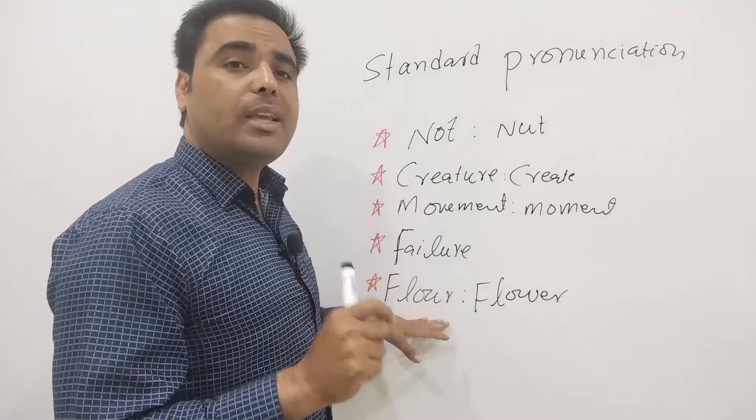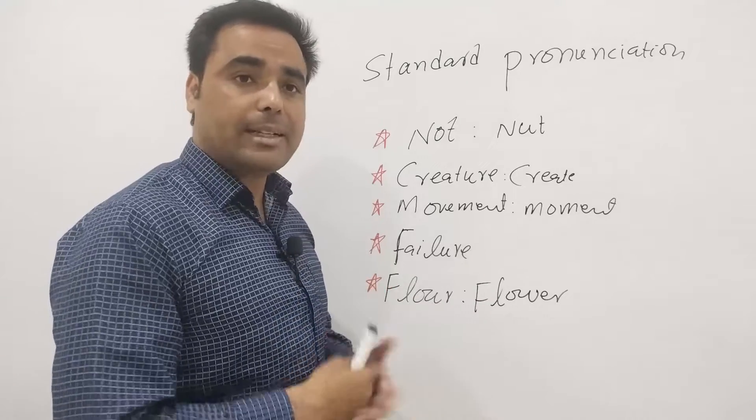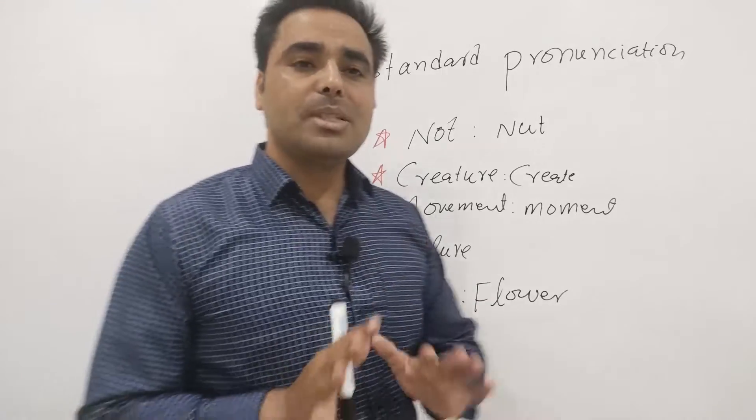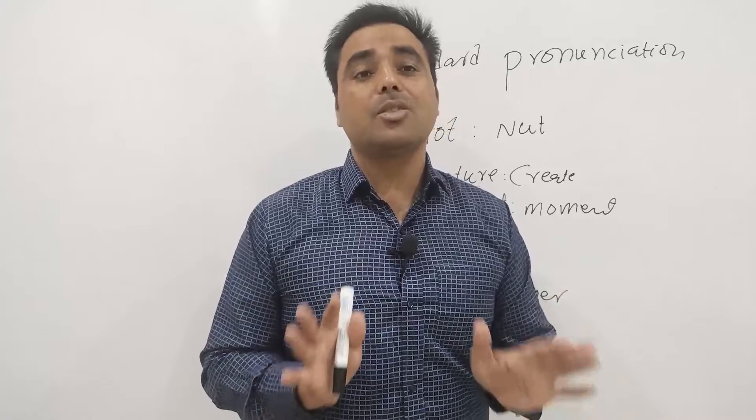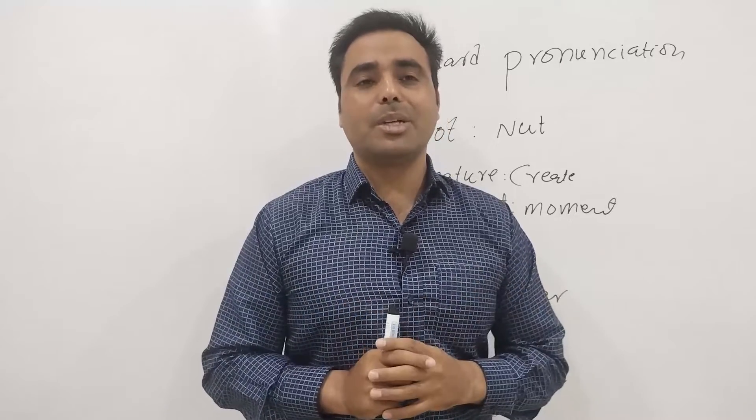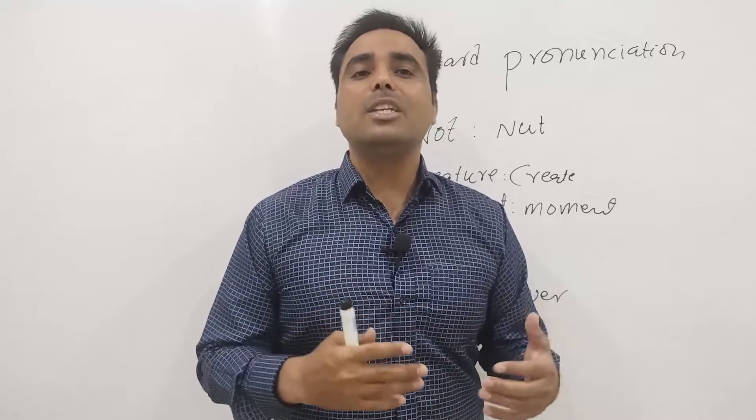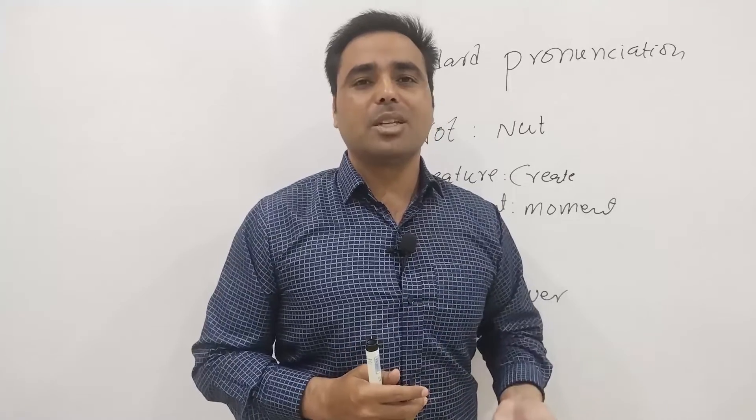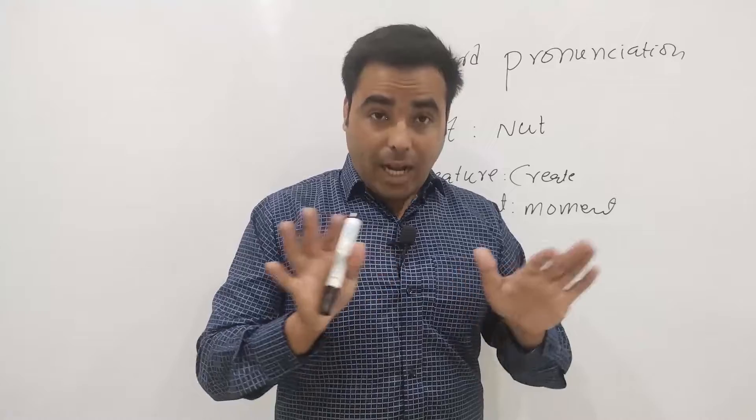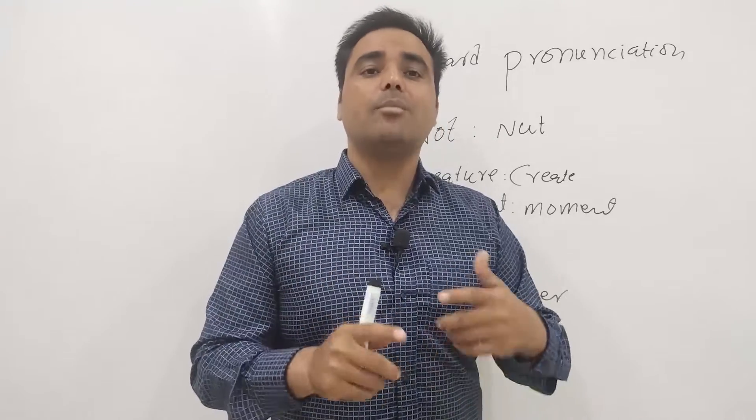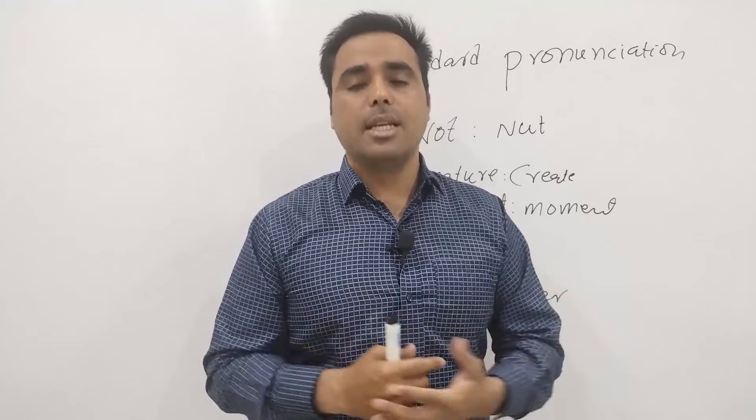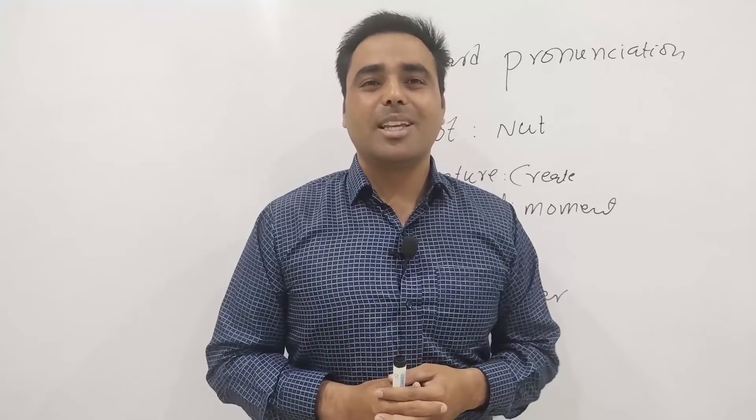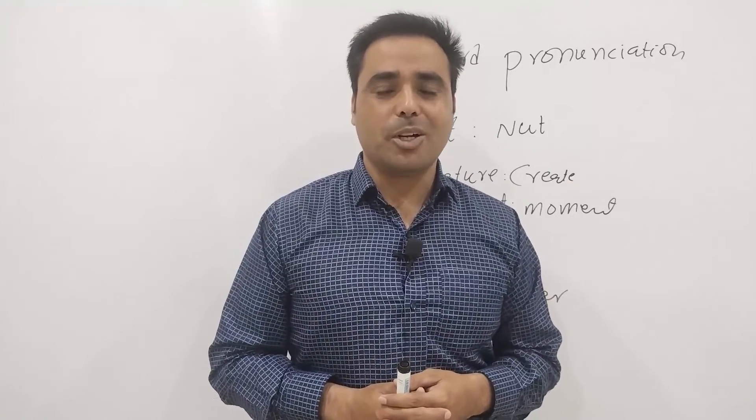So to recap: the first one is not or nut, second is creature not creature, next is movement not moment, second last is failure not fail-ever, and the last one is flower. So I hope you will pronounce these in the standard way. For more interesting videos, keep watching English with Sadiq. Thank you for watching.